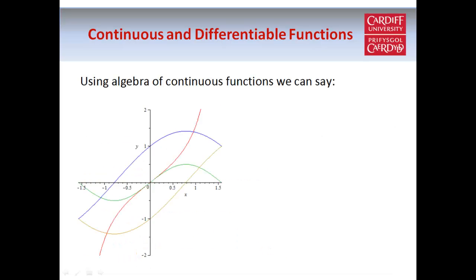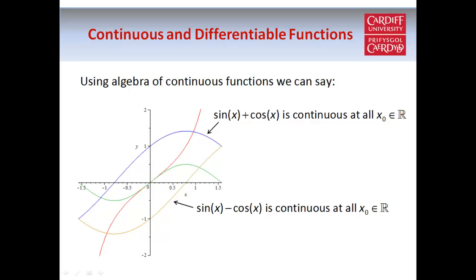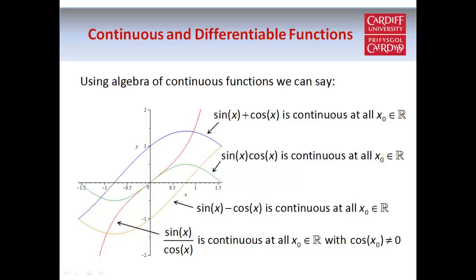Using these rules, since sin(x) and cos(x) are both continuous at every point x₀, we know that sin(x) + cos(x), sin(x) − cos(x), and sin(x) × cos(x) are also continuous at every point x₀. And sin(x) / cos(x) is continuous at all points x₀ where cos(x₀) is non-zero. Since sin(x) / cos(x) is also referred to as tan(x), we can show using algebra of continuous functions that tan(x) is continuous at all points where the cosine function is non-zero.